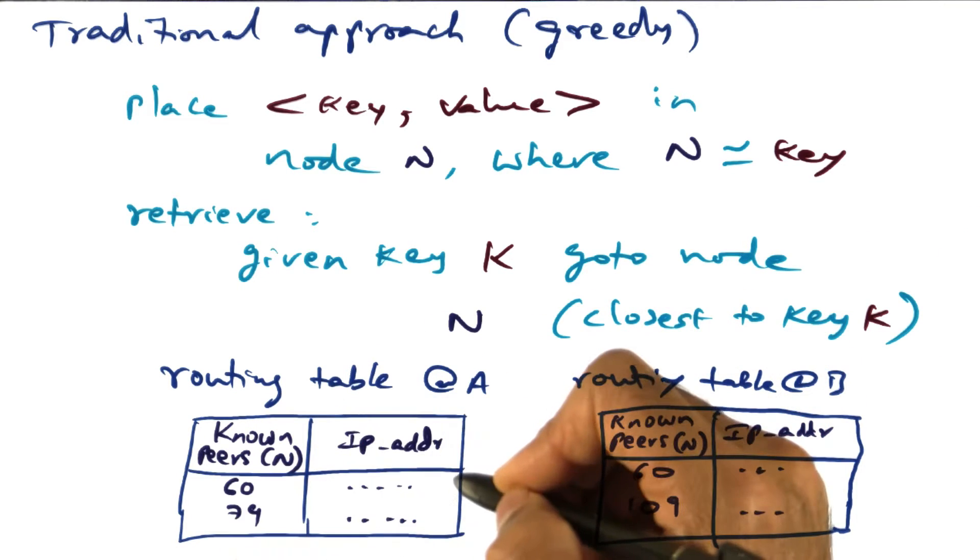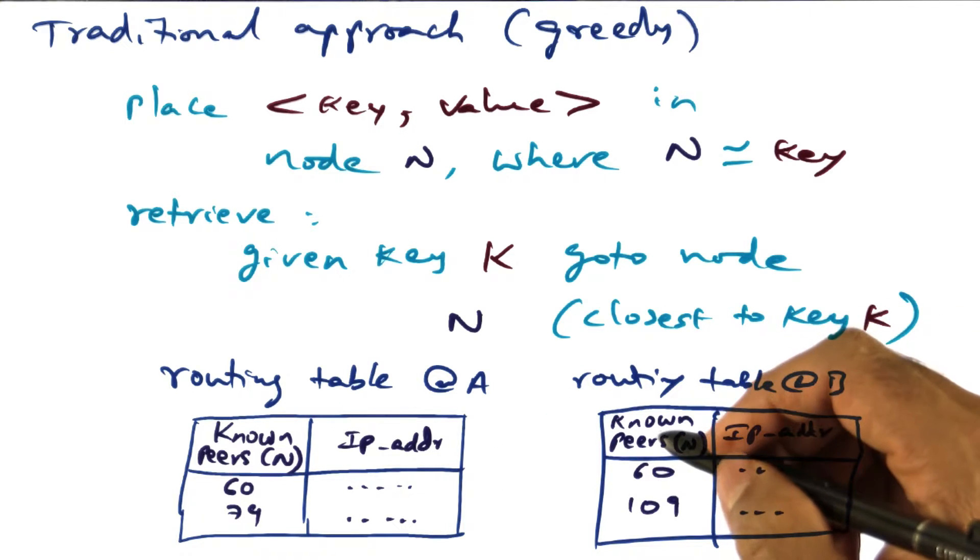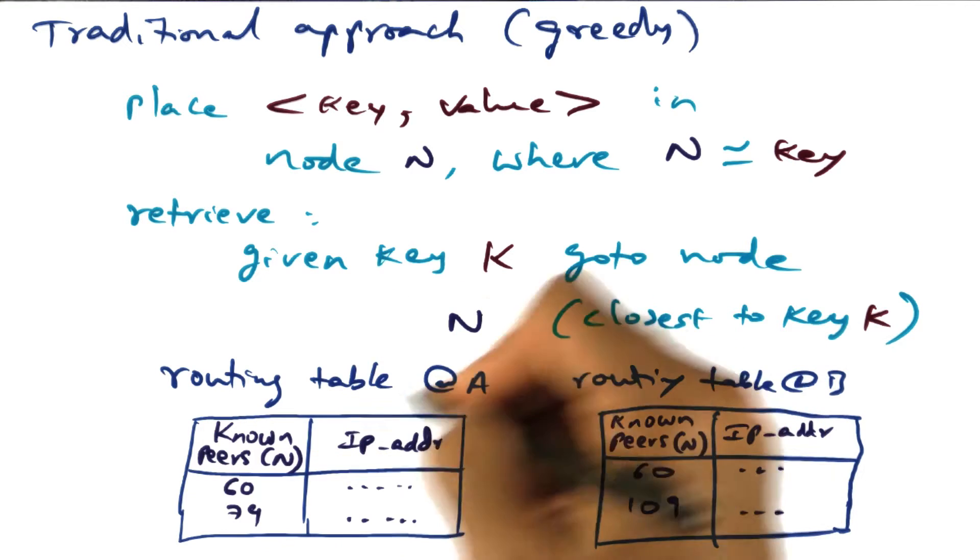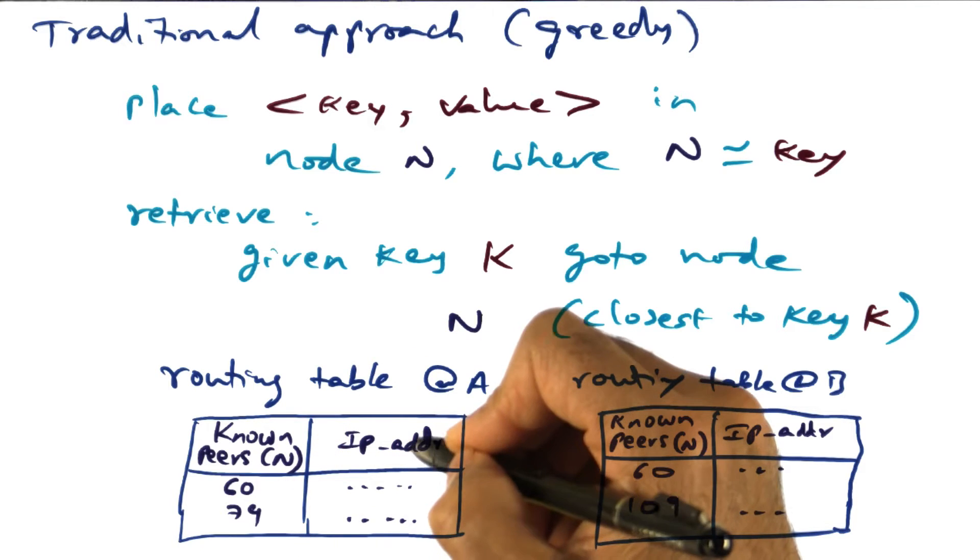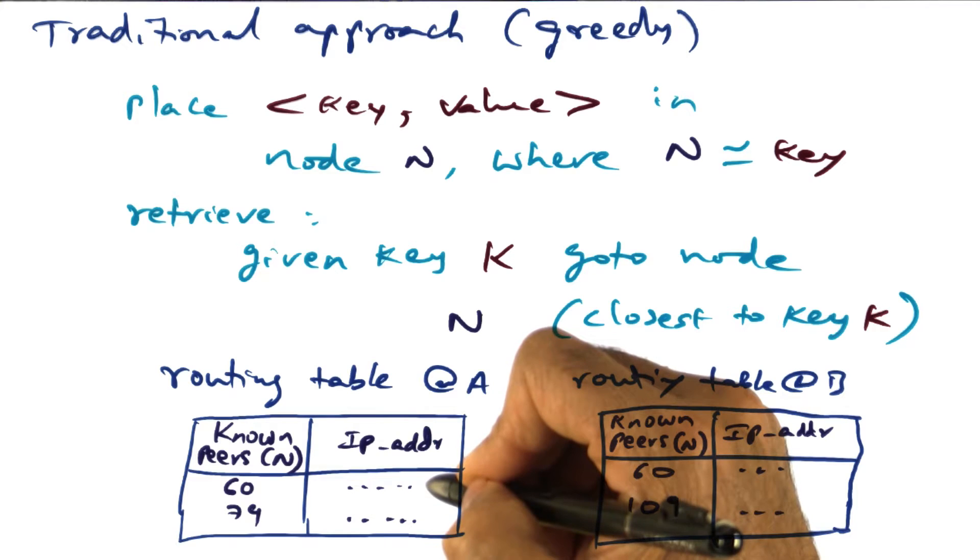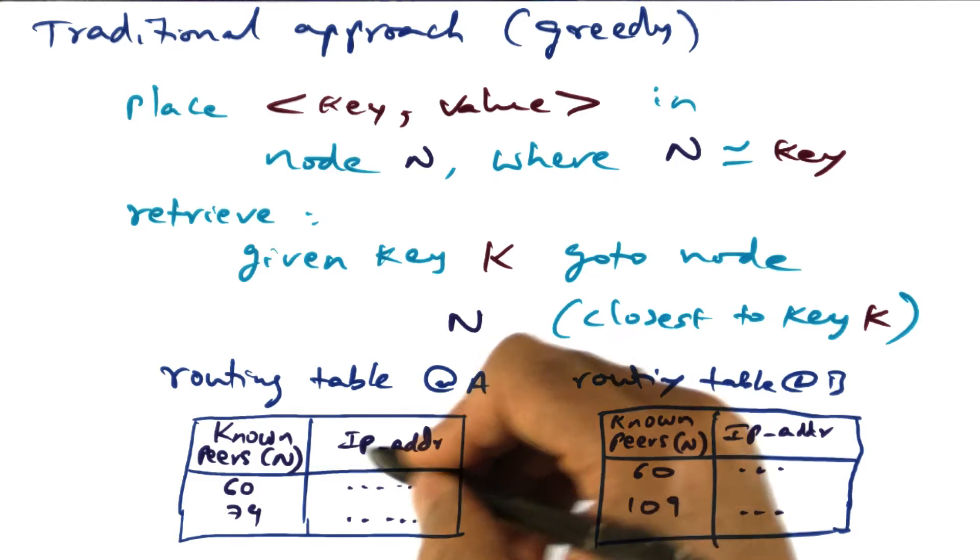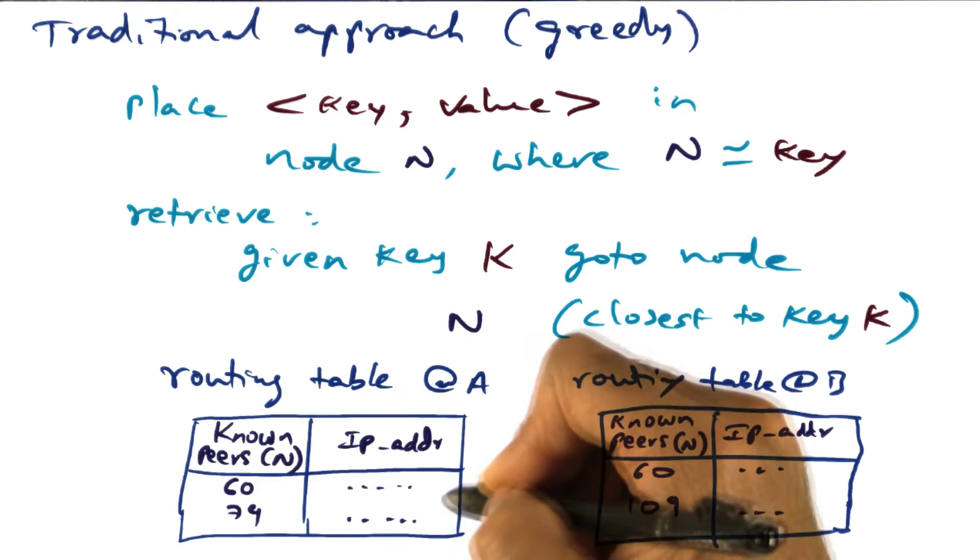That's how these routing tables get populated at different nodes in the distributed system at the user level. So this routing table at A says that these are the known peers to me, whose node IDs I know, and I know their mapping of the node ID to the IP addresses. Now the node space may be much bigger than the number of entries I have in my routing table.